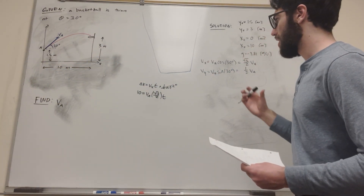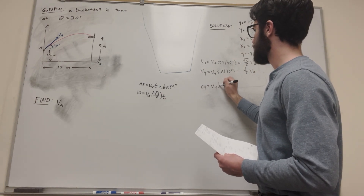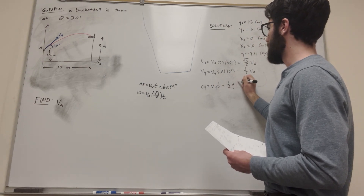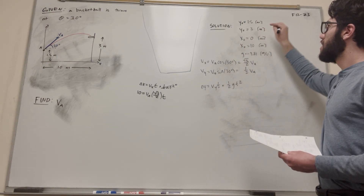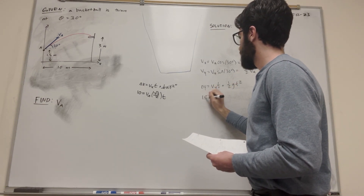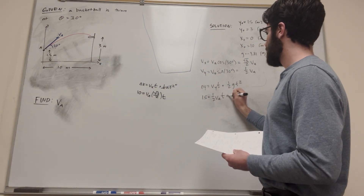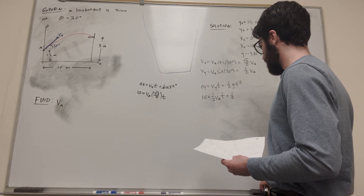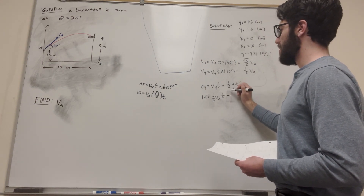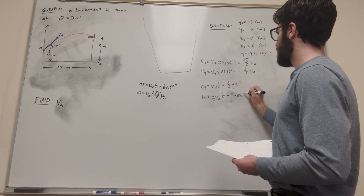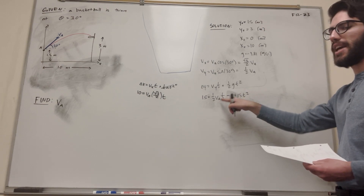Let's go to the vertical direction. Δy equals velocity-y times time plus (1/2)·gravity·t². Delta y is y-final minus y-initial, which is 3 minus 1.5, giving us 1.5. Velocity-y is (1/2)·va, so we have: 1.5 = (1/2)·va·t + (1/2)·(−9.81)·t², which simplifies to 1.5 = (1/2)·va·t − 4.905·t². Again, two unknowns, t and va.